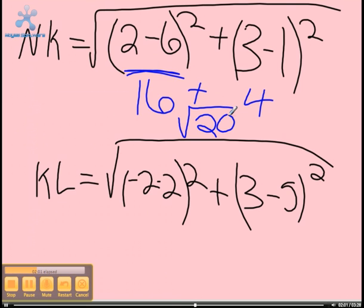And for KL, it would be negative 4 squared, which would be 16, plus negative 2 squared, which would get you 4, and that would be radical 20.